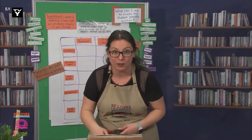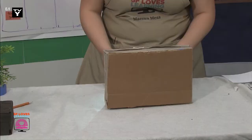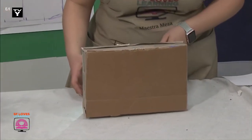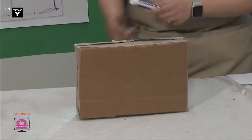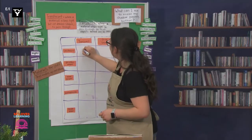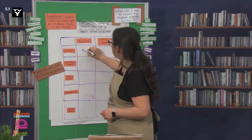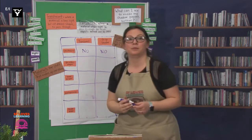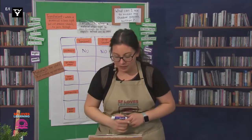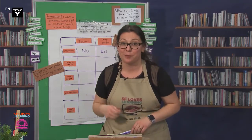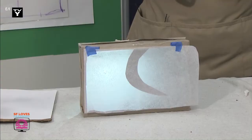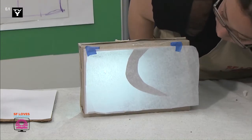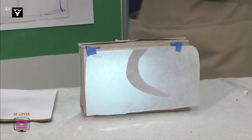Let's see what happens. I'm going to turn on my light source. Interesting — it's not translucent. No crisp shadow. Let's test out the printer paper. Oh, also translucent and crisp.